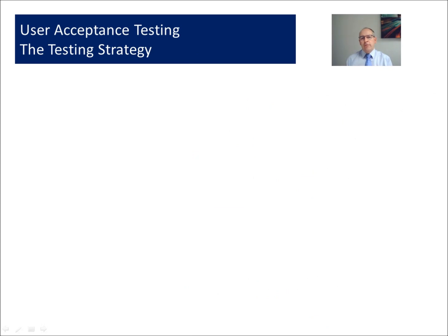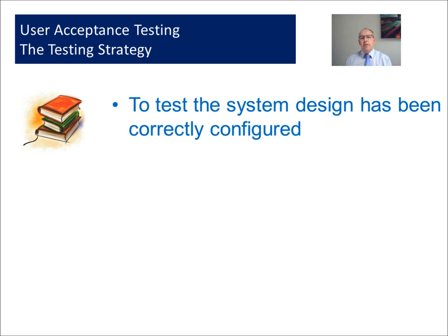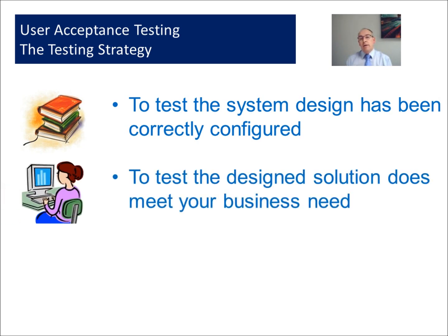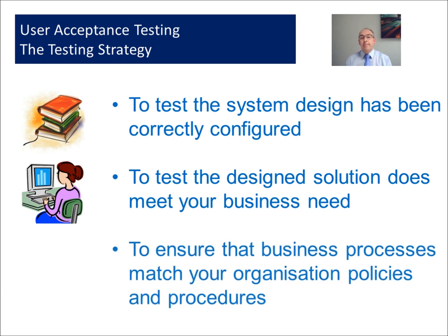For out-of-the-box configured software implementations, we'll have a look at the test strategy. The first is to make sure that the design we did early on in the implementation has been configured correctly in the system. The second is to make sure that the business need is actually met by the design — it might be that we thought one thing and when we came to implement it we realised the design needs amending. And the third is to identify that the business processes match the organisation's policies and procedures.